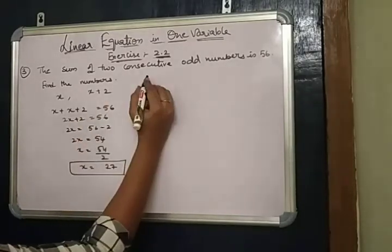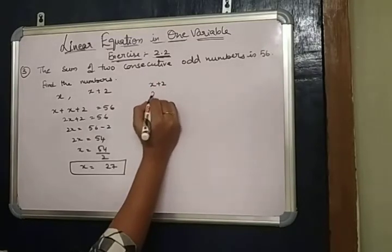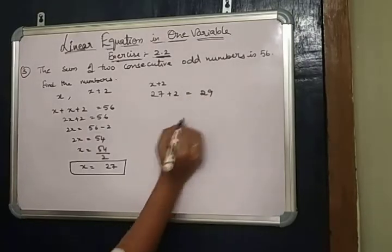Okay, this is one number. Another number is X plus 2, means in the place of X, 27 plus 2 equals 29.